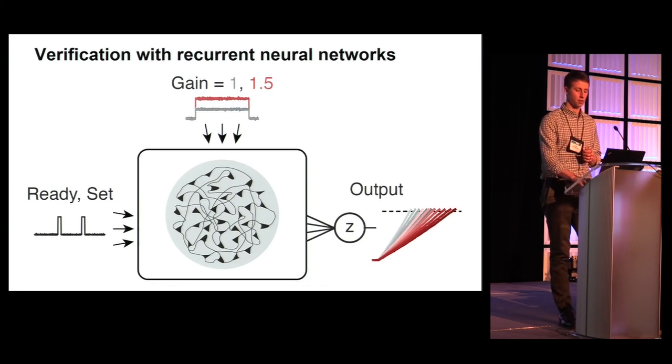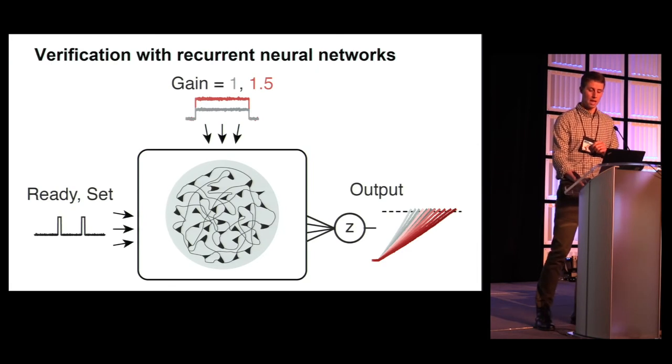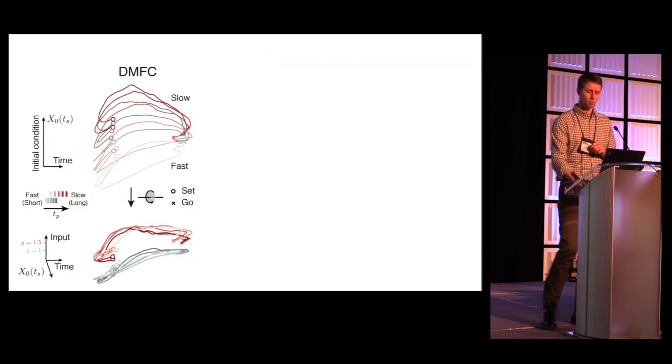So, we trained a series of recurrent neural networks to perform the gain-dependent RSG task. This network was trained to use two input pulses denoting ready and set cues and a tonic gain-dependent input to produce an output which reaches a threshold at the target interval.